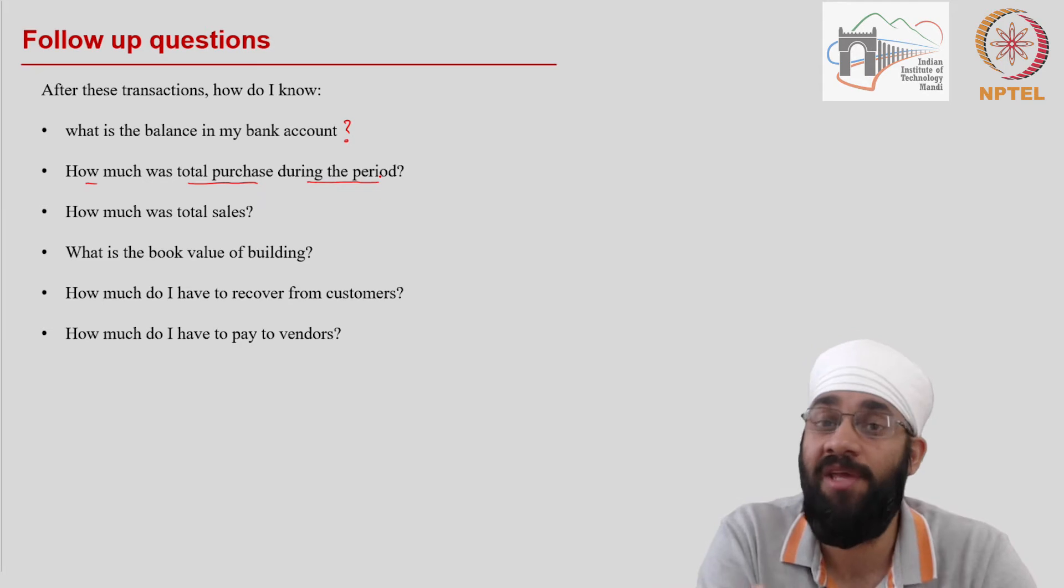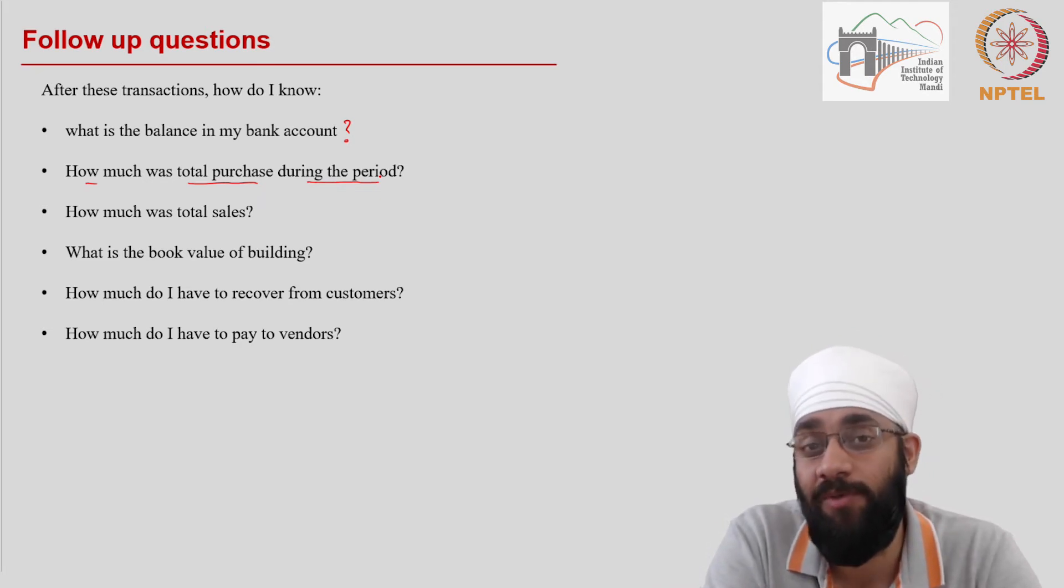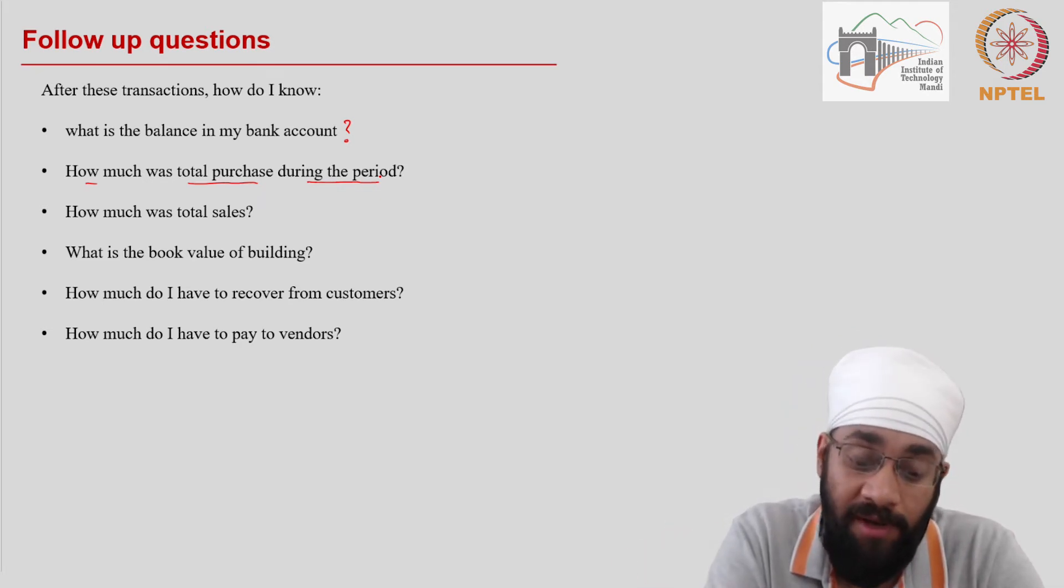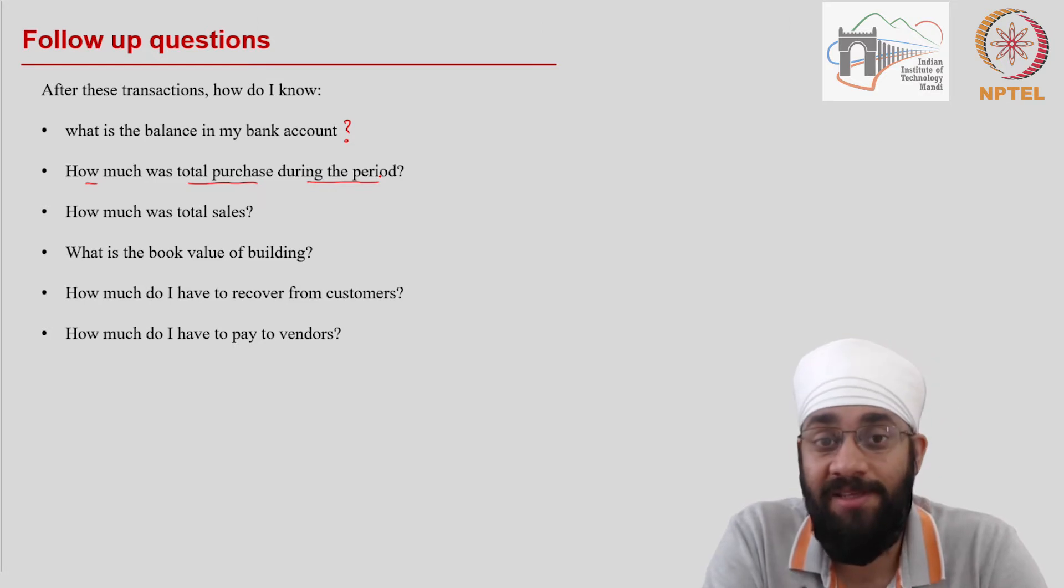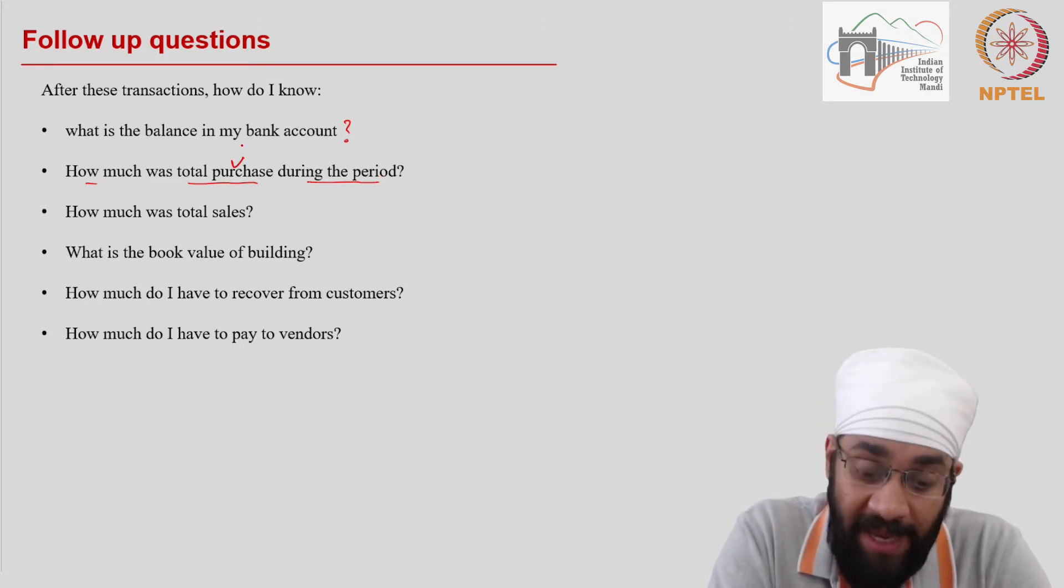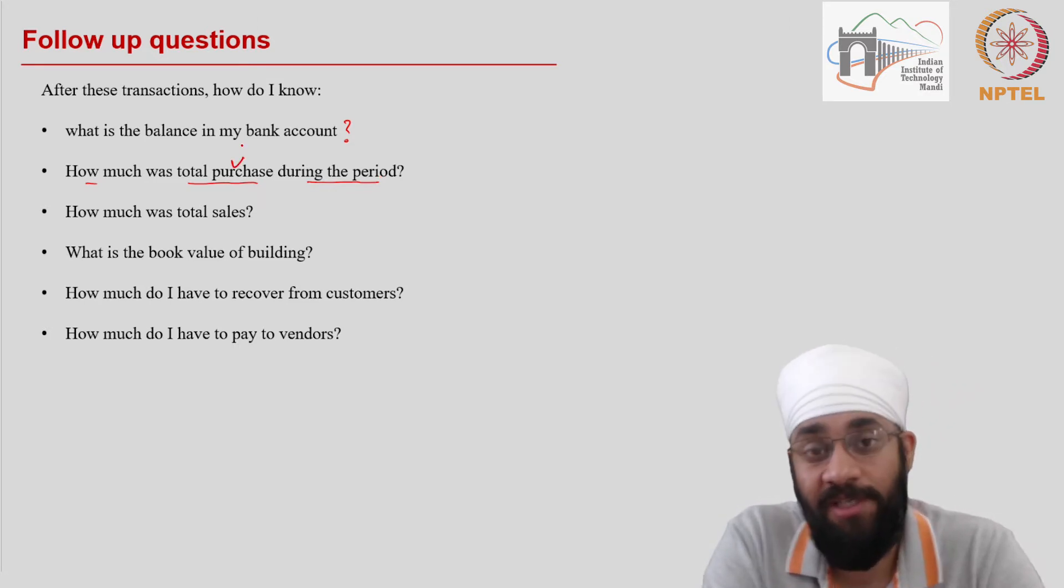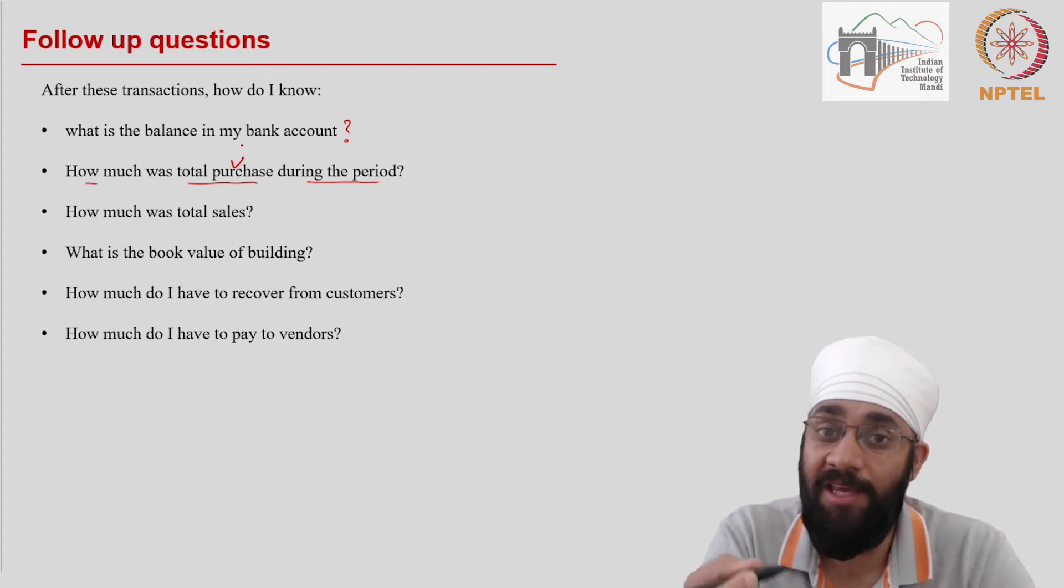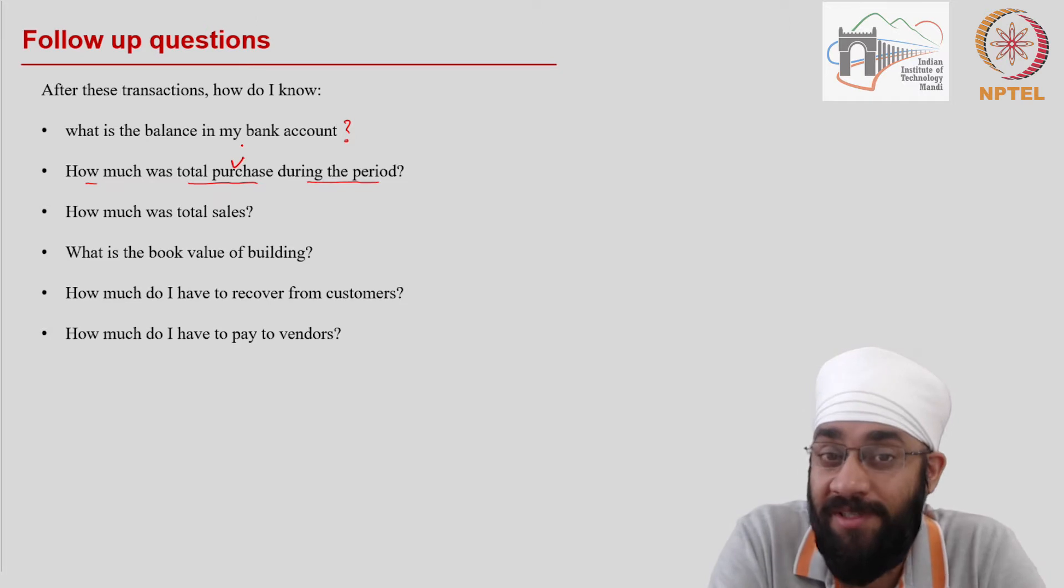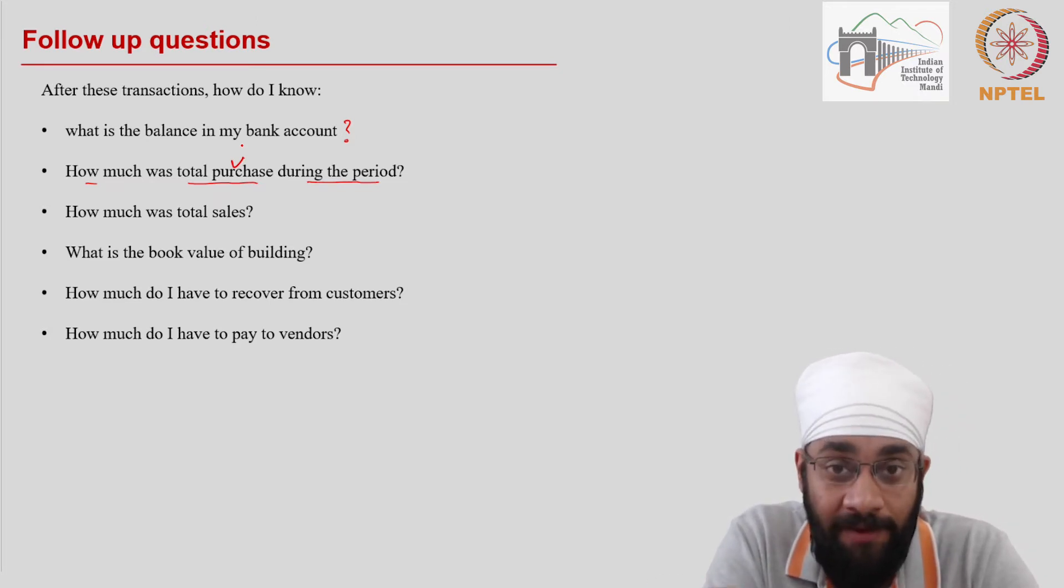It is up to you to now segregate which ones were purchases, which were sales and so on. Also some purchases will be cash purchases, other purchases will be credit purchases. In the bank statement you will only see money paid for cash purchases. So it's not possible to answer this question through a bank statement either.